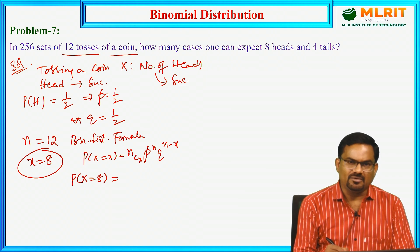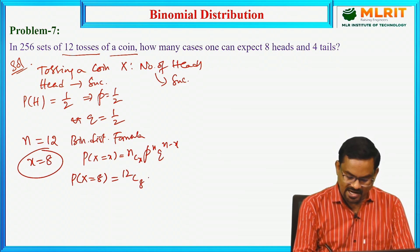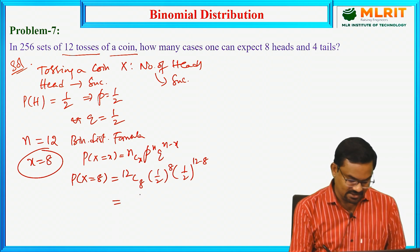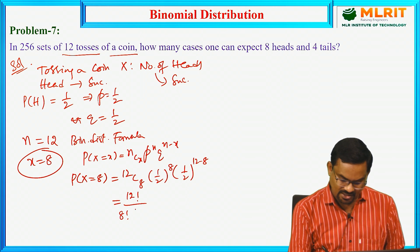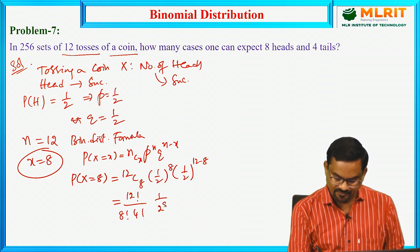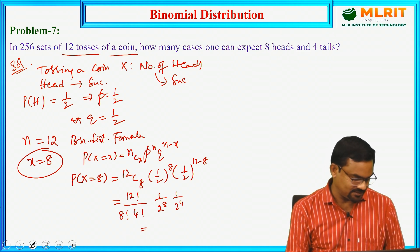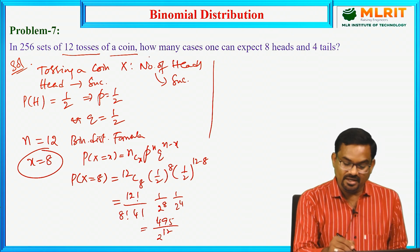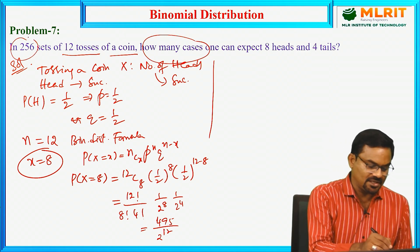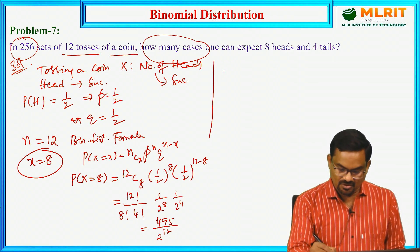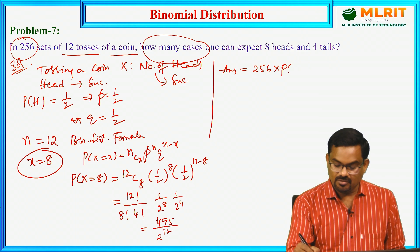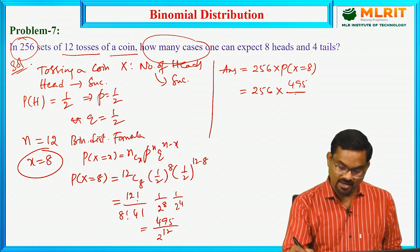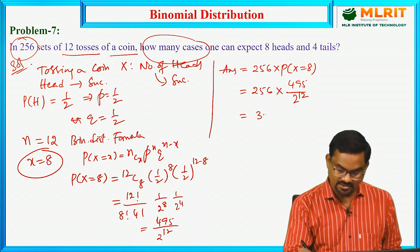So x equals 8 means 12C8 * (1/2)^8 * (1/2)^4. Calculating: 12! / (8! * 4!) * (1/2)^8 * (1/2)^4. After simplifying using the calculator, we get 495 / 2^12. The question asks how many cases out of 256 sets, so the final answer is 256 multiplied by the probability of getting 8 successes — 256 * 495 / 2^12 — which gives 30.9375.